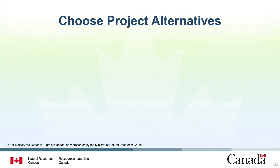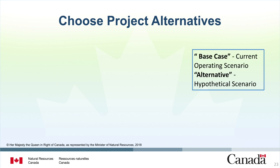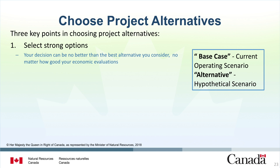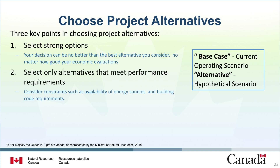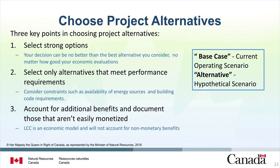Now we will discuss choosing between project alternatives. In economic analysis, an alternative is the term used to describe a hypothetical improvement project that can be compared to the current operating scenario or base case. There are three key points when choosing project alternatives. First, make sure each alternative you choose is strong — your decision can be no better than the best alternative you consider. Second, only consider alternatives that satisfy performance requirements, taking into account constraints such as availability of energy sources and building code requirements. Do not include alternatives that have to be rejected on other grounds. Third, account for additional gains that may be realized but are not directly related to performance. Remember that lifecycle costing is an economic model and will not account for non-monetary benefits.